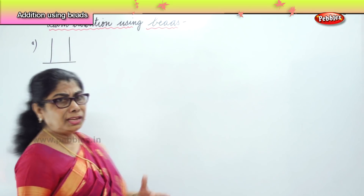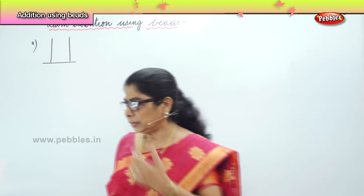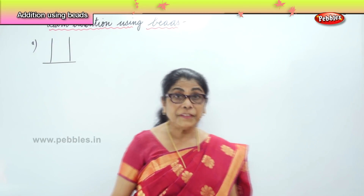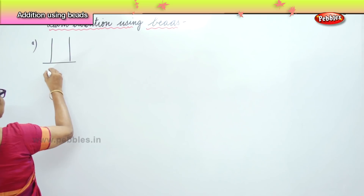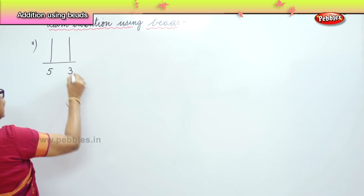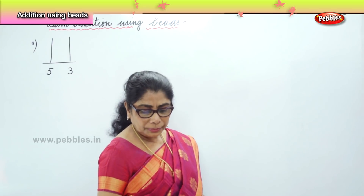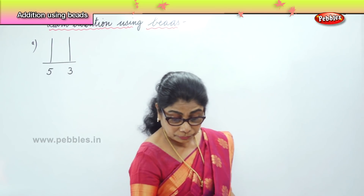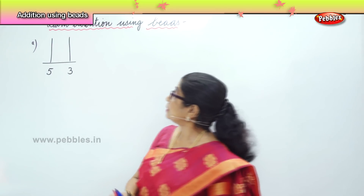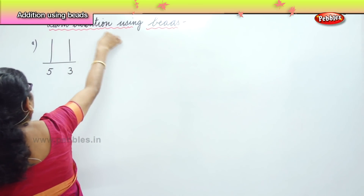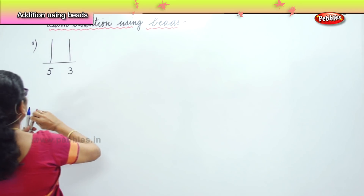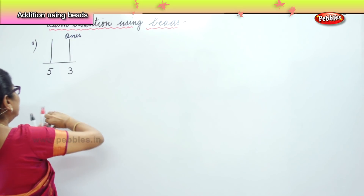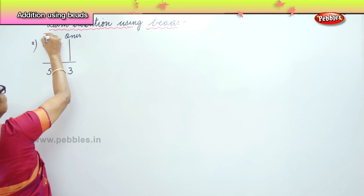Now, if I give you a number, let us say 53. This is an easy method. Now, in this, we are going to talk about tens and ones. We are learning to add using beads, and always remember: for ones, in the ones place, use blue; and in the tens place, you will use red.